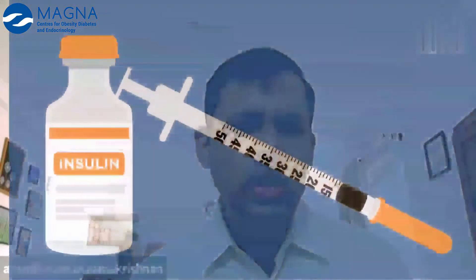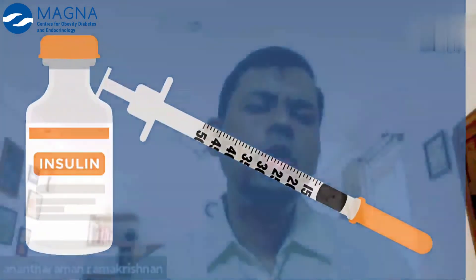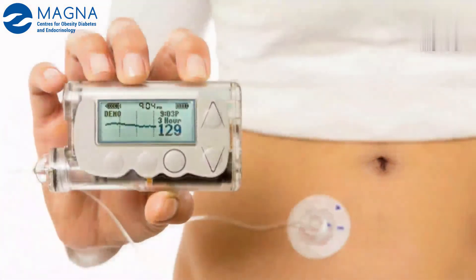How do we treat with insulin? We treat our insulin using a syringe. You can also use an insulin pump. You can use different varieties of insulin. That's why you can use insulin for the treatment.